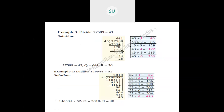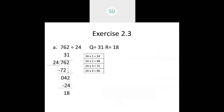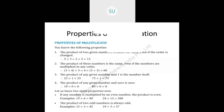We solved examples and questions from textbook exercise 2.3. Today we will see properties of multiplication and division — first, properties of multiplication. The product of two given numbers remains the same even if the order is changed. When multiplying two numbers, you can multiply them in any order and the product will remain the same.